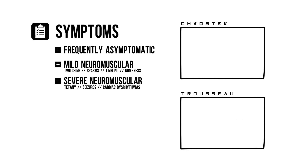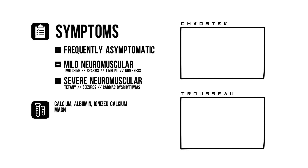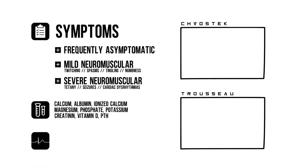Now that you know the symptoms, causes, and complications of hypocalcemia, you know what additional tests to order: calcium, albumin, ionized calcium, magnesium, phosphate, potassium, creatinine, vitamin D, and PTH. And get an ECG.